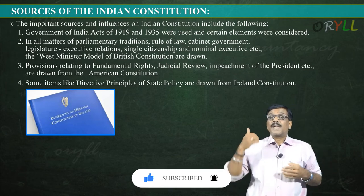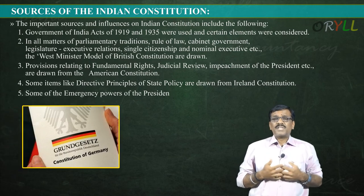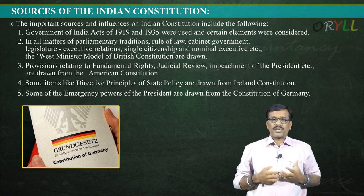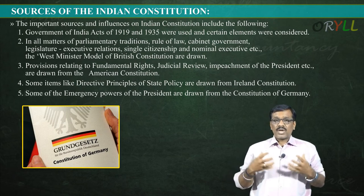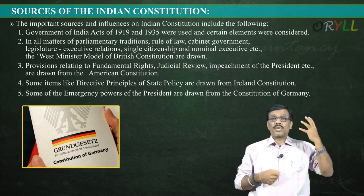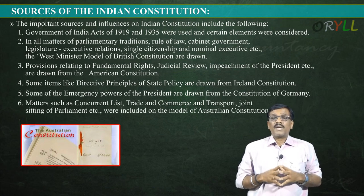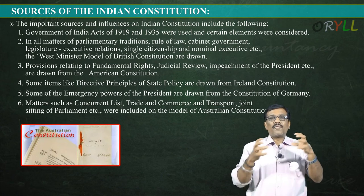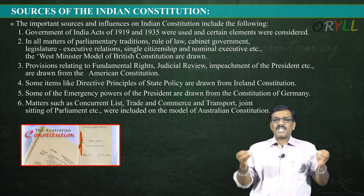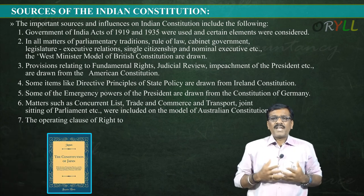Directive Principles of State Policy are drawn from the Irish Constitution. Some emergency provisions of the president are drawn from the Weimar Constitution of Germany, which deals with how a country handles emergencies. Matters such as the Concurrent List and trade and commerce are modeled on the Australian Constitution, which relates to federal matters between the union and the states.